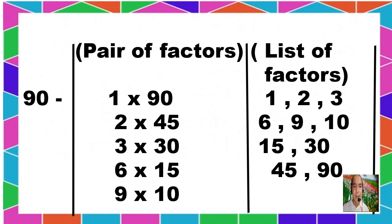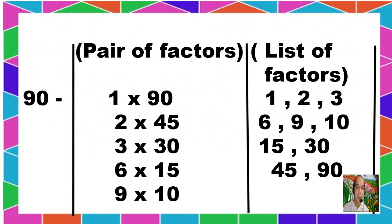Another number is 90. What are the pair of factors for 90? First, 1 times 90. Next, 2 times 45 gives 90. 3 times 30 gives a product of 90. 6 times 15 gives a product of 90. 9 times 10 still gives 90. These are the pair of factors for 90. What are the list of factors for 90? We have 1, 2, 3, 6, 9, 10, 15, 30, 45, and 90. These are the list of numbers used as a factor for 90.